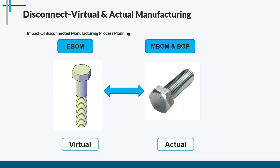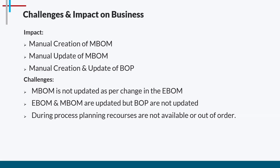In Manufacturing Process Planner, there is a disconnection between virtual and actual world manufacturing. For example, a product is designed in a CAD system creating an engineering bill of material, and the actual product is manufactured and delivered to the customer. There is a large gap between these two — the eBOM and mBOM and BOP — representing virtual world and actual world manufacturing. The mBOM is being created and updated manually, and the same for BOP creation and update.